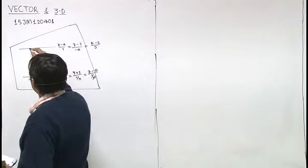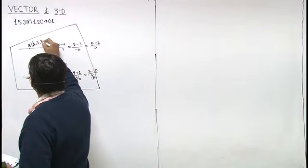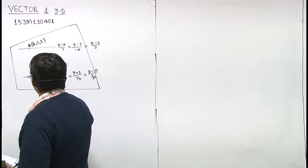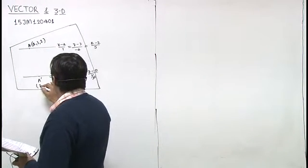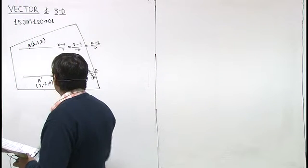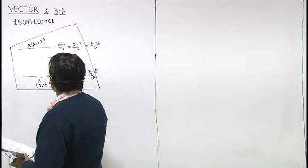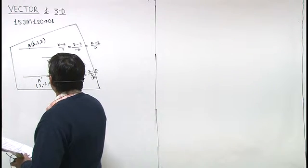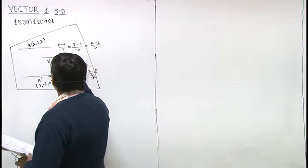The first line is the point that is 4, 3, 2. The second line is the point that is 3, minus 2, 0 and the parallel vector is i cap minus 4j cap plus 5k cap.